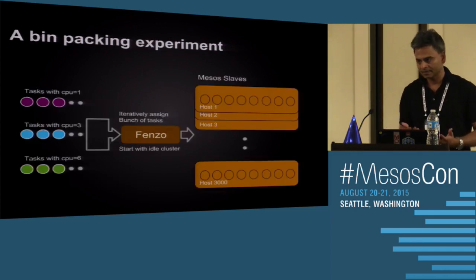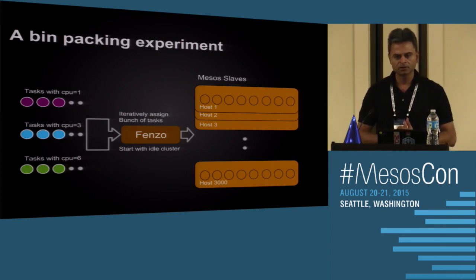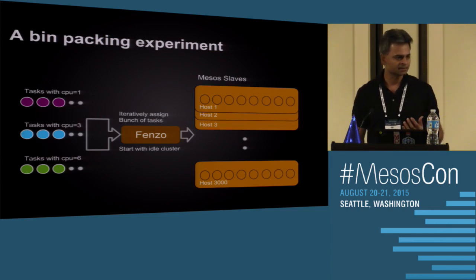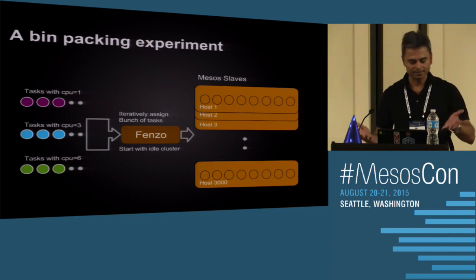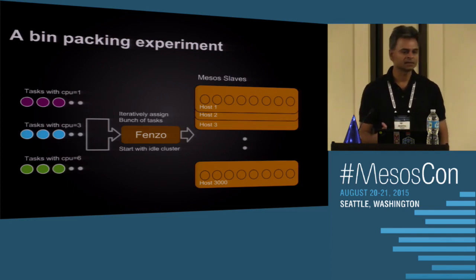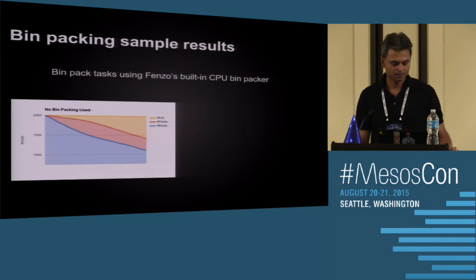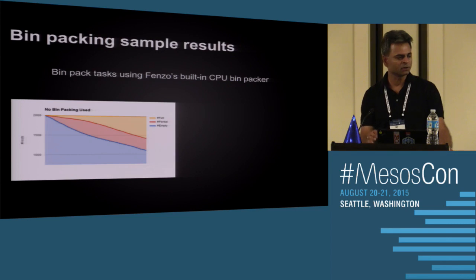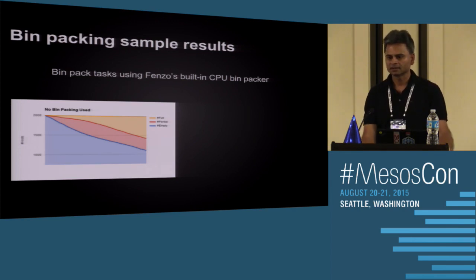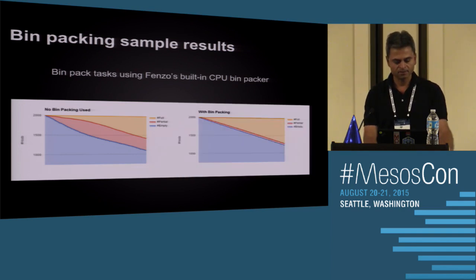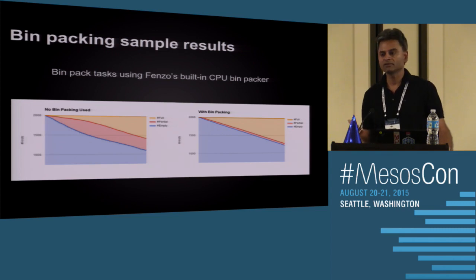We ran a bin-packing experiment with 3,000 eight-core hosts and three task types: single CPU, three CPUs, and six CPUs. Without bin packing, some hosts were fully utilized, some partially, some empty. With bin packing, more hosts were fully packed, very few were partially packed, and more hosts were idle. That's how bin packing helps — with that simple fitness equation.